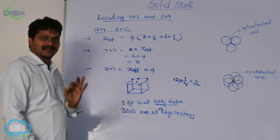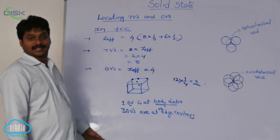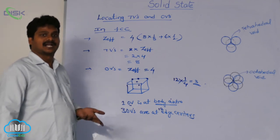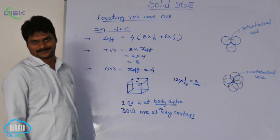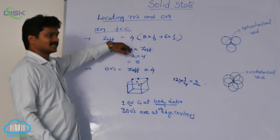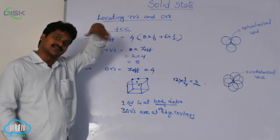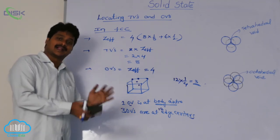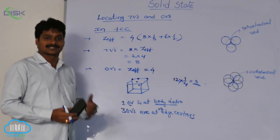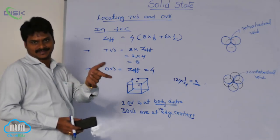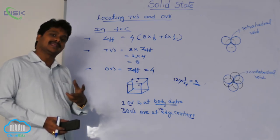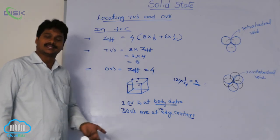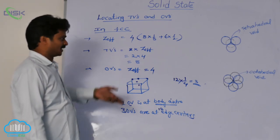Always remember: edge centers are nothing but octahedral voids. In FCC, only one octahedral void — at the body center — contains a complete atom. The remaining octahedral voids contain part of an atom (one-fourth) because they are at edge centers shared with other unit cells. All tetrahedral voids are present inside the unit cell, but only one octahedral void is fully inside; the remaining are shared with other unit cells.